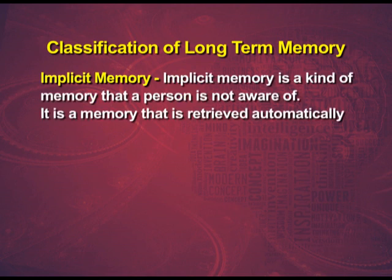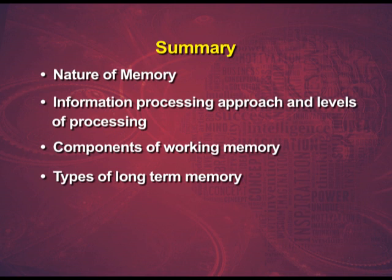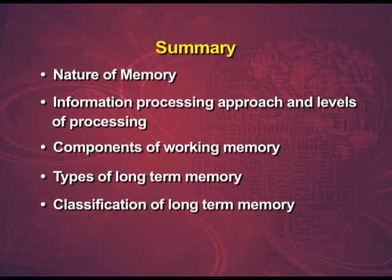Implicit memory is a kind of memory that a person is not aware of — it is retrieved automatically. An example is typing. With this, we end the first part of the chapter on Human Memory. We first learnt about the nature of memory, the information processing approach and levels of processing, then components of working memory, followed by types of long-term memory and its classification as flashbulb memories, autobiographical memories and implicit memories. Thank you.